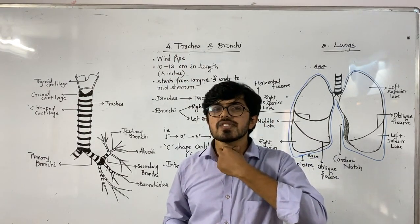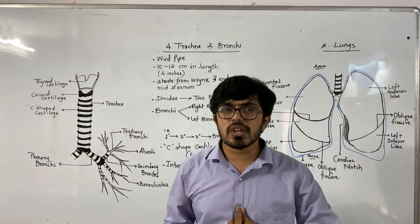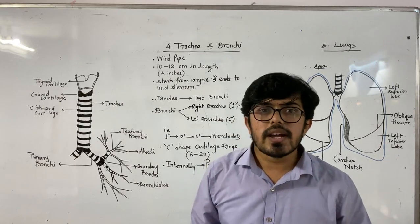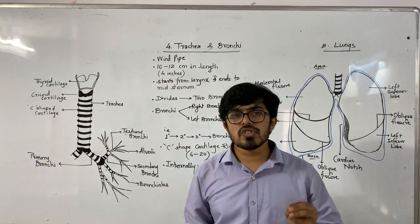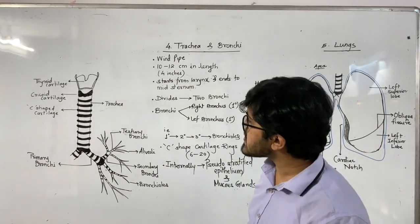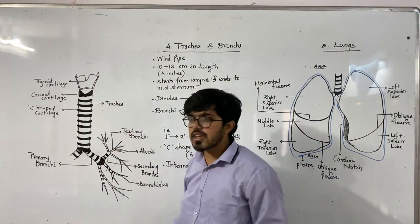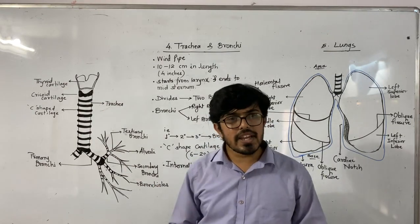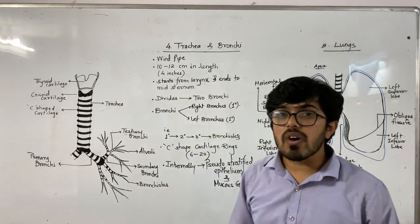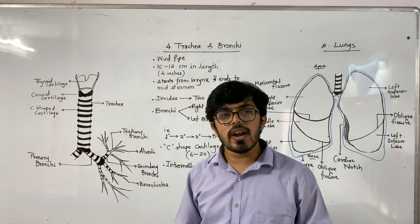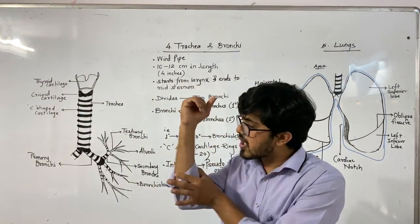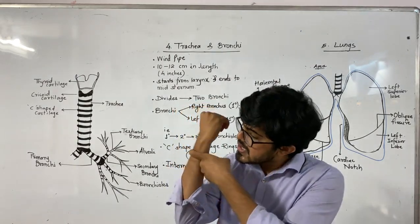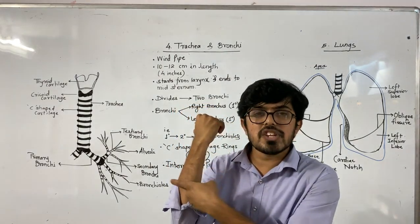Trachea starts from the larynx region and extends up to the mid-sternum region. The overall average length of trachea is 10 to 12 centimeters, which is nearly four inches. If you see the diagram of trachea, you will notice dark semicircular regions — these are cartilage rings. Trachea is covered by C-shaped cartilage rings on its ventral side.